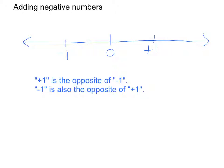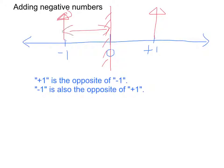On the other hand, negative one is also called the opposite of positive one. It's just like there's a mirror here at zero. If you are standing at positive one, then you can see your image on the other side. It should be the same size, and the distance should be equal, but on the opposite side. Therefore, positive numbers and negative numbers are actually opposites of each other.